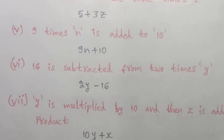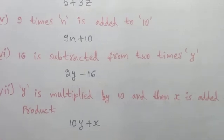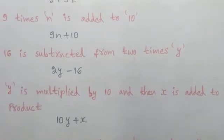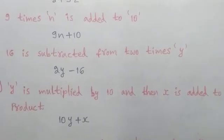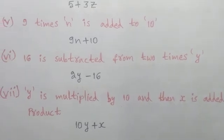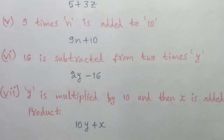Seventh statement: Y is multiplied by 10 and then X is added to the product. Y multiplied by 10 gives 10Y, and then we add X to the product. So 10Y plus X is the answer.